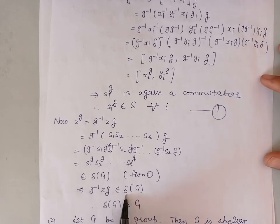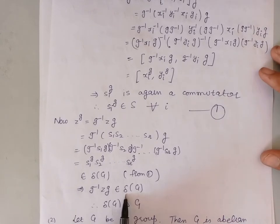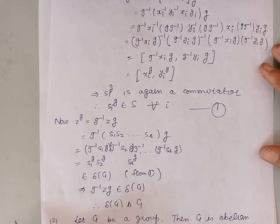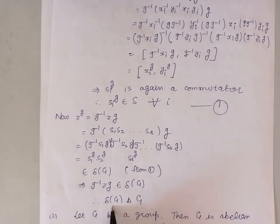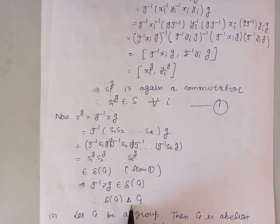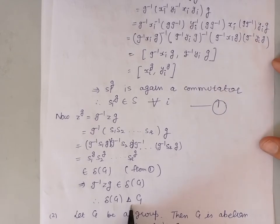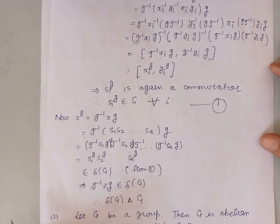This proves the definition of normal subgroup of the group G. So, this proves that the commutator subgroup of a group G is a normal subgroup of G. This was the first property of commutator subgroups.